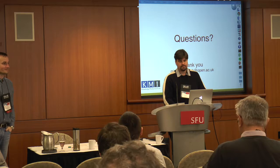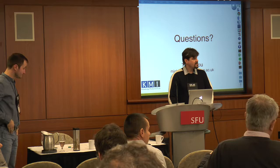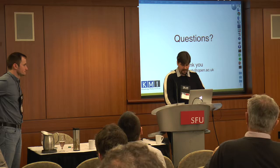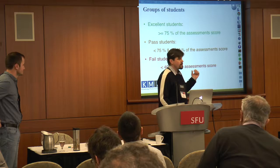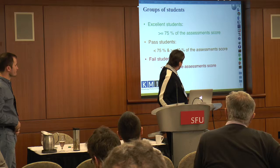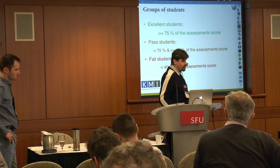Question: When you were coding the students against your taxonomy of excellent, pass, and fail, what were the criteria? Answer: Yes, this is based on the score of the assessment. More than 75% is the excellent student. There is a middle range between 75% and 40%, and 40% is the level for passing the course.